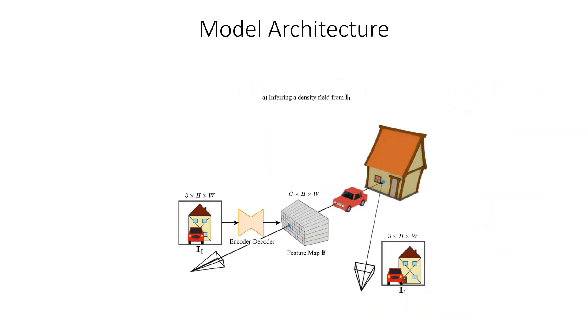The prediction of a density field happens in two steps. First, we predict a pixel-aligned feature map from the input image using a high-capacity encoder-decoder network. Every feature in this feature map implicitly describes the density distribution along the ray through the respective pixel. As shown in the figure, the distribution can model geometry even in occluded regions, for example behind the car.